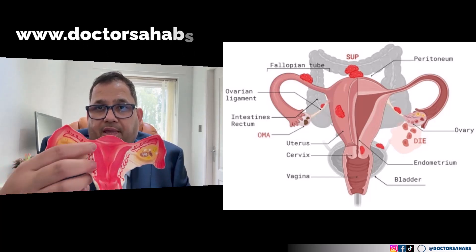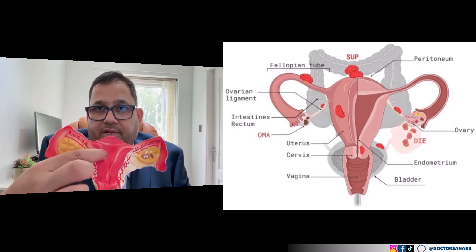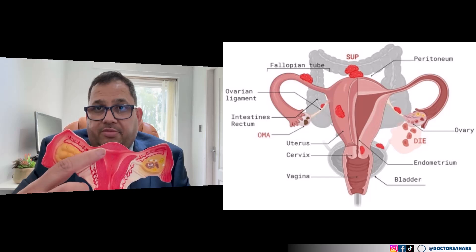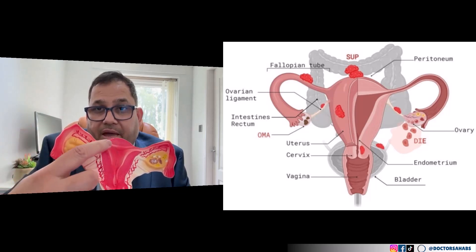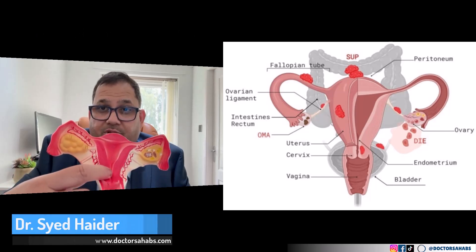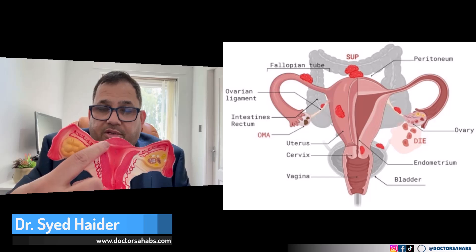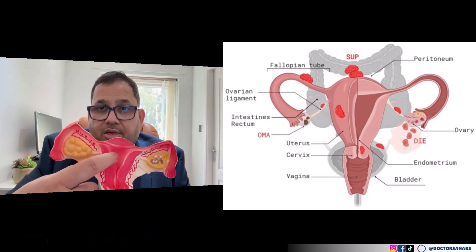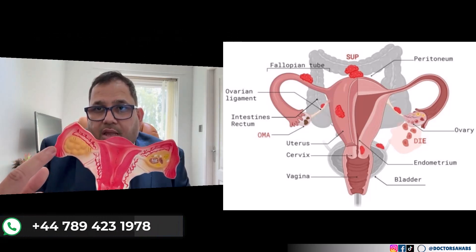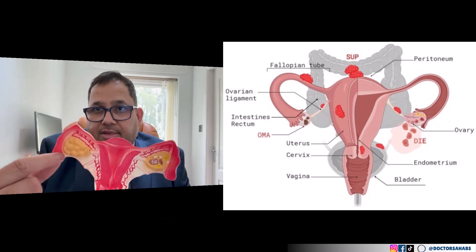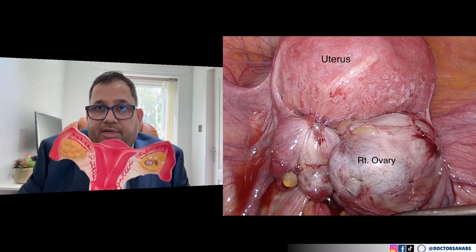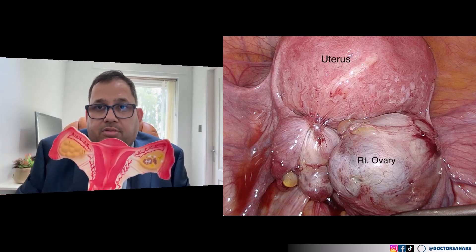In retrograde menstruation, instead of the endometrial lining being shed out through the vagina during the menstrual cycle, a backward movement of endometrial tissue occurs. You can imagine the endometrial lining going backward — it can deposit on the ovary, in the fallopian tube, and even in surrounding structures like the pelvic wall, bladder, and colon.